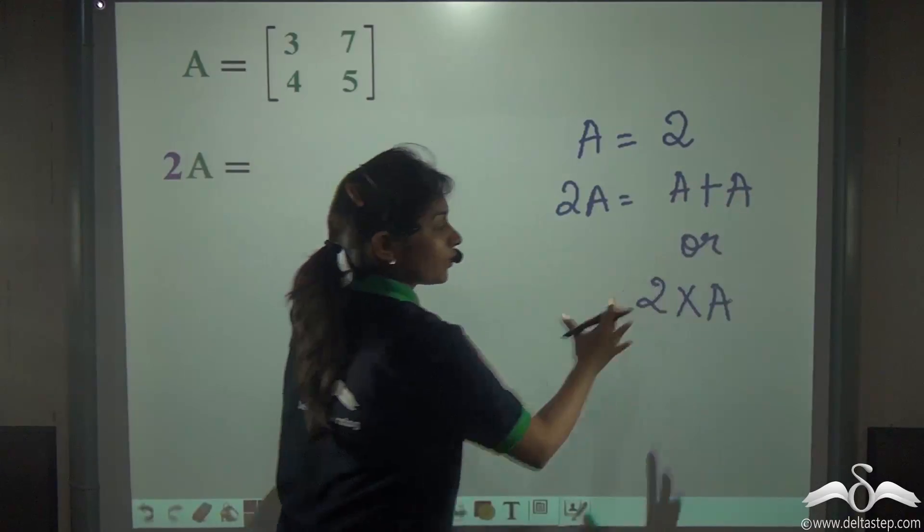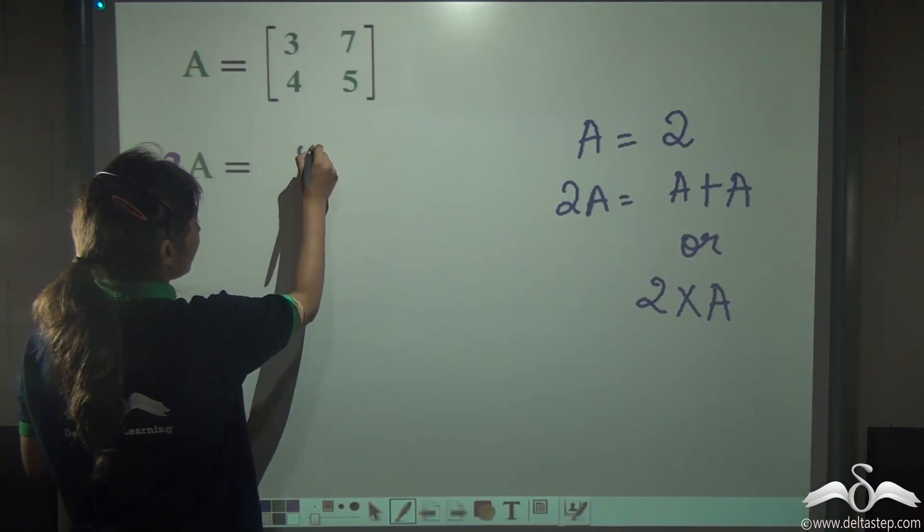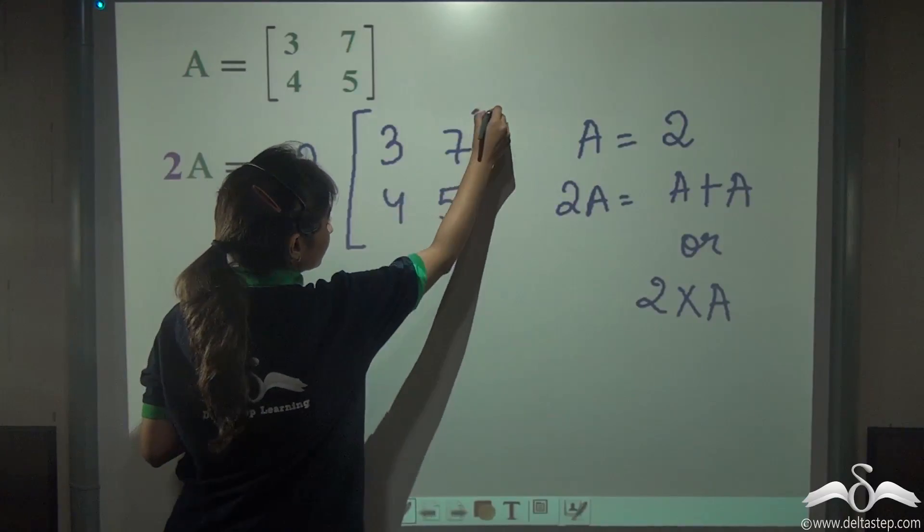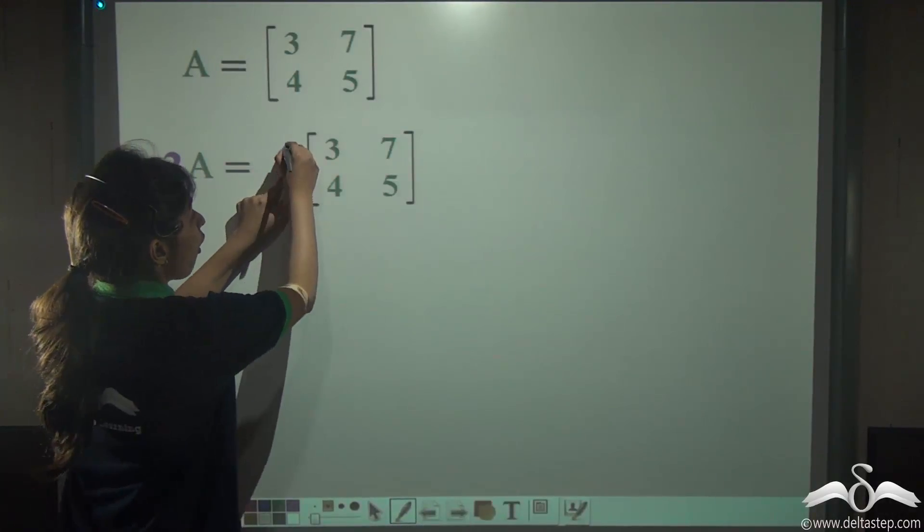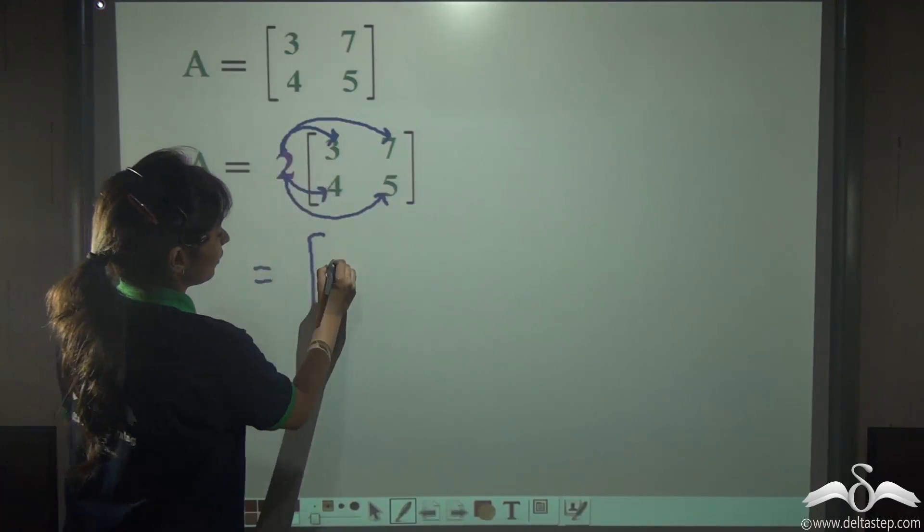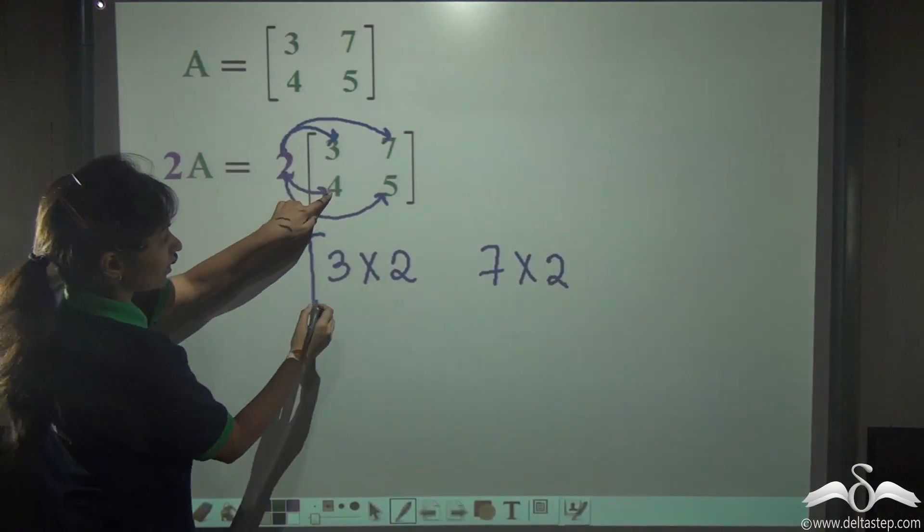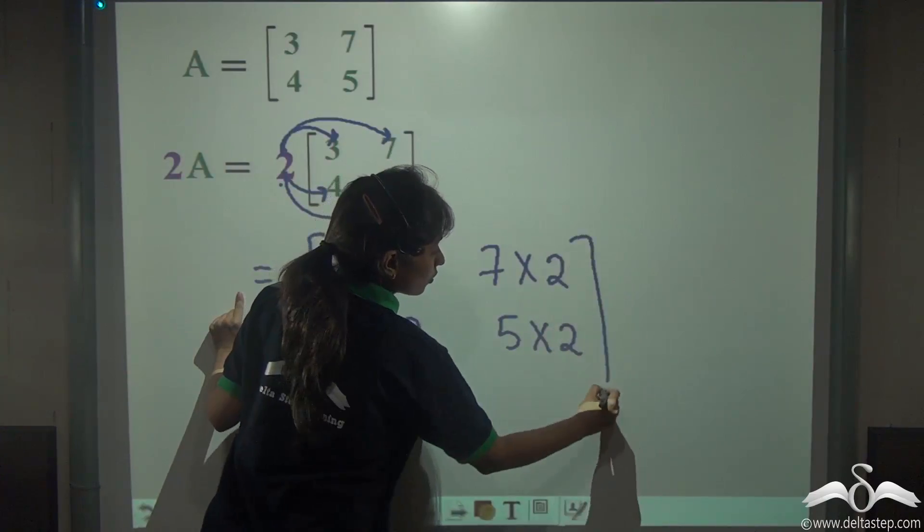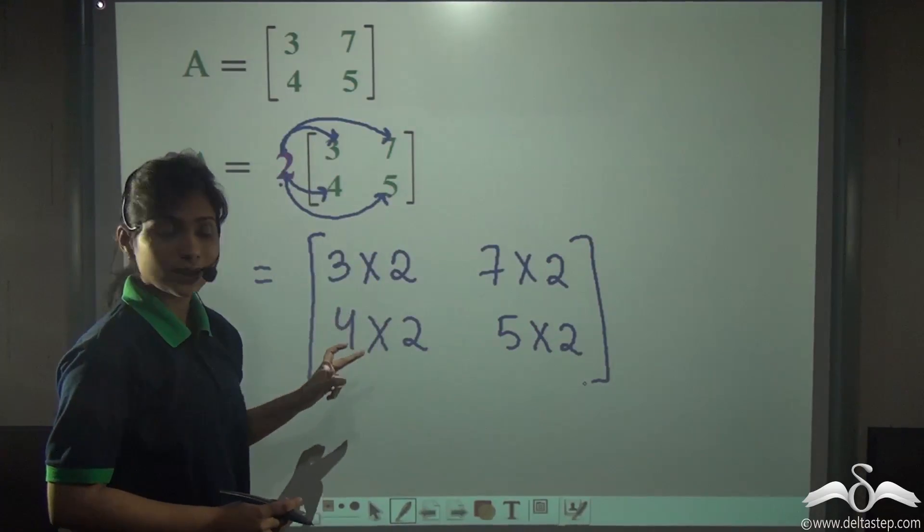We have been given a matrix A is equal to [3,7,4,5]. To avoid the confusion of adding two matrices, we will just multiply this number 2 into A with all the numbers inside this matrix. You have to multiply this number 2 with all the entries inside the matrix.